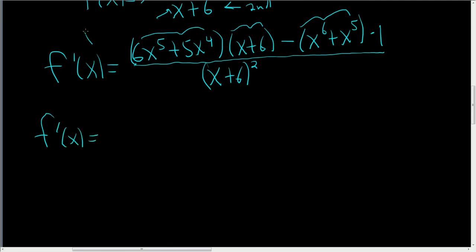So let's FOIL. So the derivative, or rather distributing, we get 6x to the sixth. That's the first piece. Then the outside will be 36x to the fifth. Then the inside is 5x to the fifth. And then the last is 30x to the fourth.